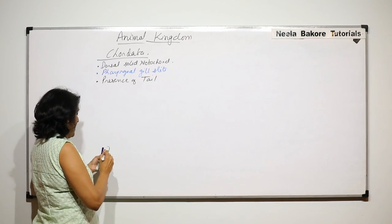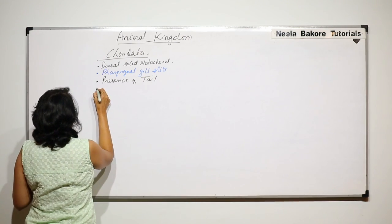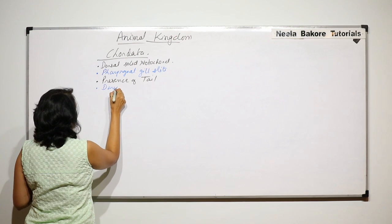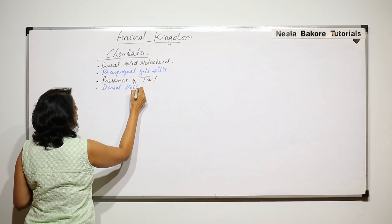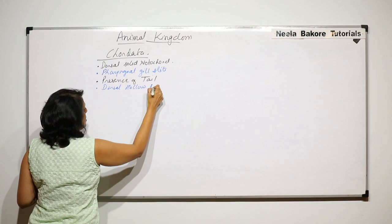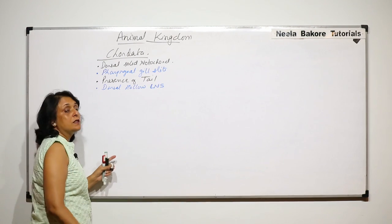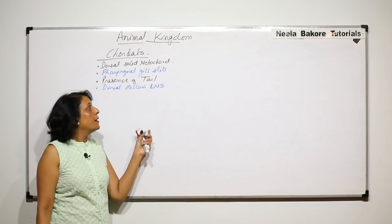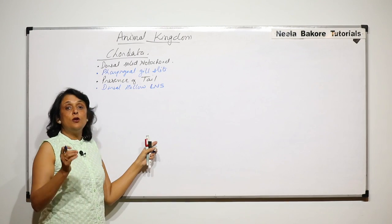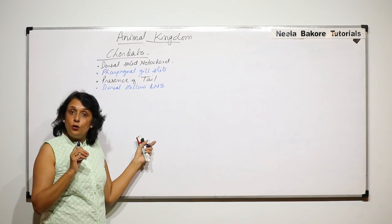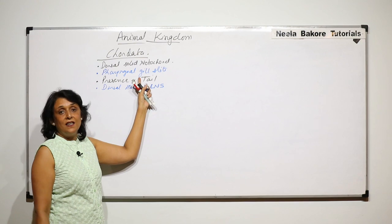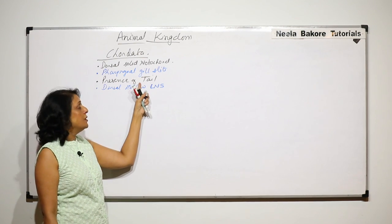Fourth is presence of dorsal hollow central nervous system which comprises of brain and spinal cord.